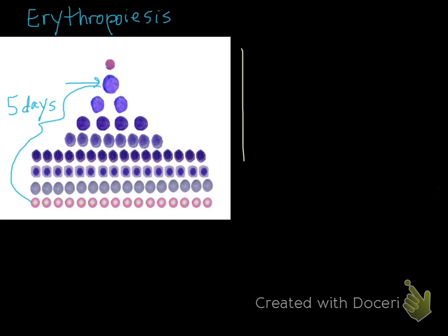So as this maturation happens, you can see that red cells get smaller, they lose their nucleus.